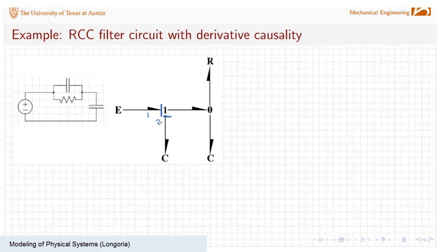Let's go ahead and number these as one, two, three, four, and five. Voltage two and charge two is one of our states. At this point, I have two energy storage elements. I might have two states, but by putting two efforts here, this bond now has to impose flow back to this one junction, which means this C ends up having forced derivative causality. There's no choice there because I have to have both of these bonds determining flow into this zero junction, because bond three here already determined effort.